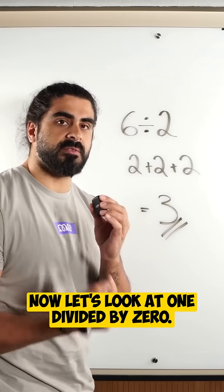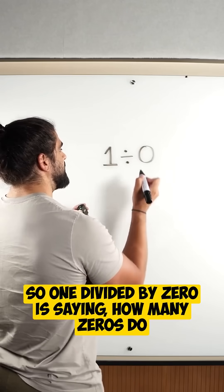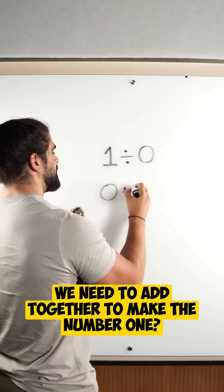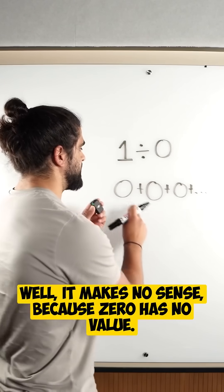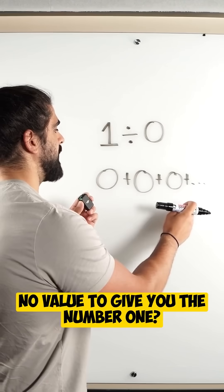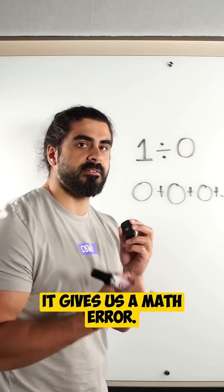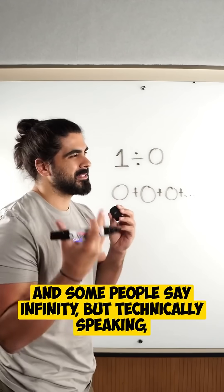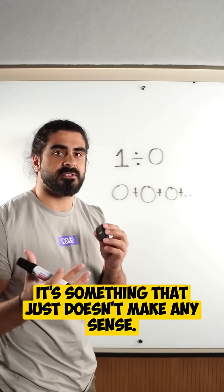Now let's look at 1 divided by 0. So 1 divided by 0 is saying how many 0s do we need to add together to make the number 1? Well it makes no sense because 0 has no value. So how can you add something that has no value to give you the number 1? It gives us a math error, and some people say infinity, but technically speaking it's something that just doesn't make any sense.